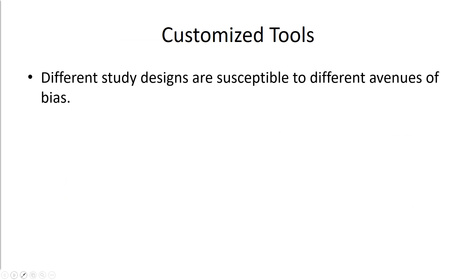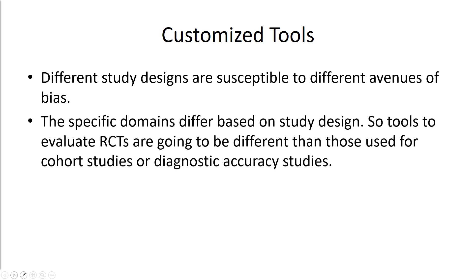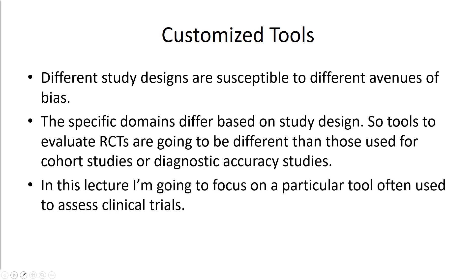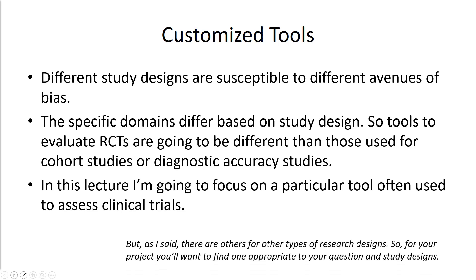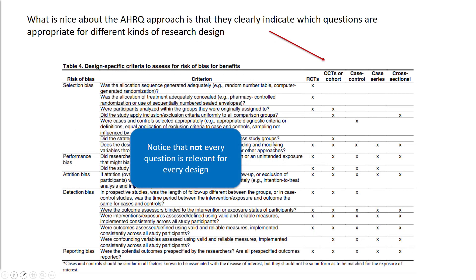Different study designs are susceptible to different sorts of bias, so the specific domains differ based on study design. Tools to evaluate randomized controlled trials are going to be different than those used for cohort studies, diagnostic accuracy studies, or studies of exposure. In this lecture, I'm going to focus on a particular tool often used to assess clinical trials. For your project, you'll want to find one appropriate to the question and the study designs. What's nice about the AHRQ approach is that they clearly indicate which questions are appropriate for different kinds of research designs.